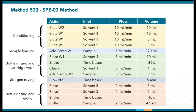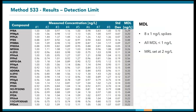So this is what Method 533 looks like on the SPE03 system. If you look from left to right, each step involves selecting the action to perform and then choosing one of the six solvents or your sample as the inlet. Flow rate and volume are then defined based on your method requirements. After starting the run, it takes just under two hours to complete all eight samples without any intervention. The duration is mostly determined by the volume and flow rate requirements of the method.